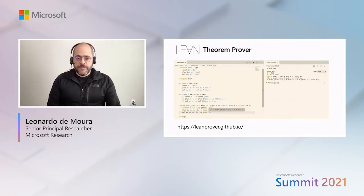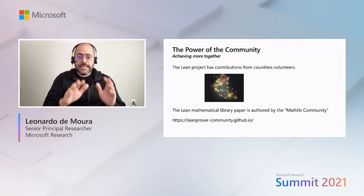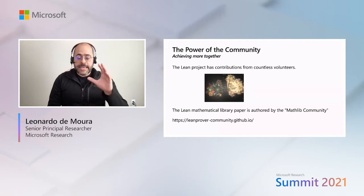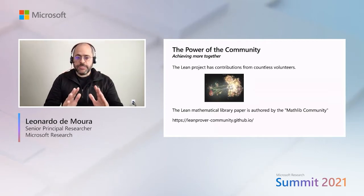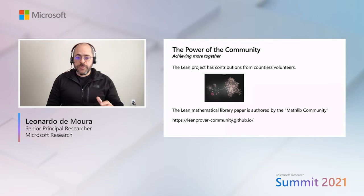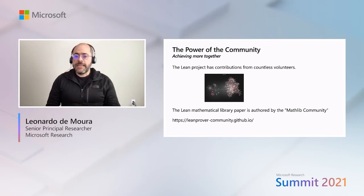We are very grateful for the Lean community. The Lean project has the contributions of countless volunteers. Here we have an animation built by Andre Bauer, using information stored on GitHub in the Mathlib repository. Here we see hundreds of mathematicians working together — something we have never seen before. We say this is a math hive. The Lean mathematical library paper is authored by the Mathlib community. There are so many authors in this paper that we decided to use just the Mathlib community.